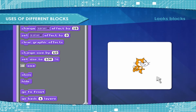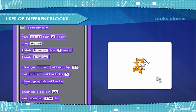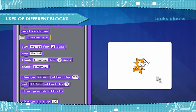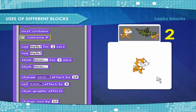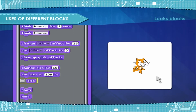Scratch has the following Looks reporter blocks. Costume — for sprites, the number of the sprite's costume in the list. Size — the sprite's size.